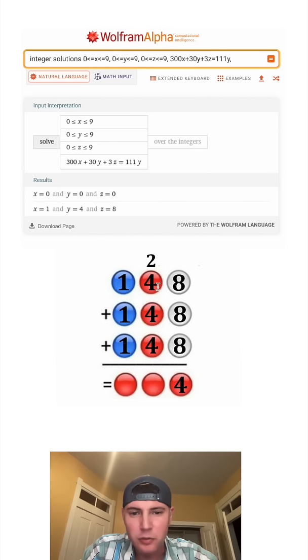And then 2 plus 4 is 6, plus 4 is 10, plus 4 is 14. So we have the 1 and the 4. And then 1 plus 1 plus 1 plus 1 is equal to 4. So you can see this did end up working out. So we managed to get Wolfram Alpha to solve it for us. How exciting.